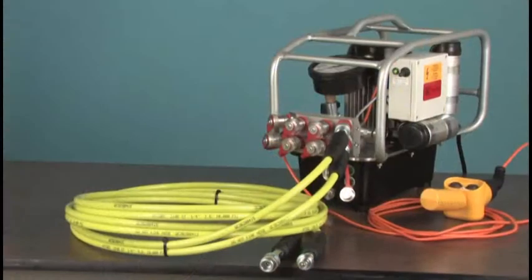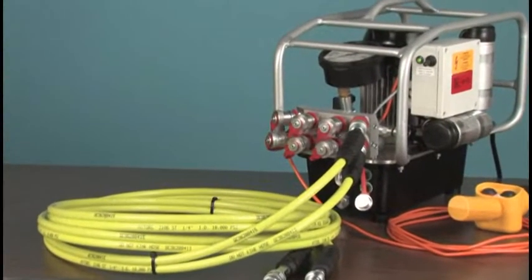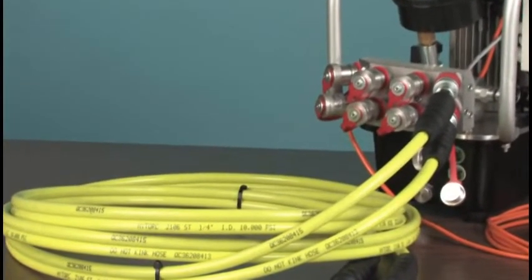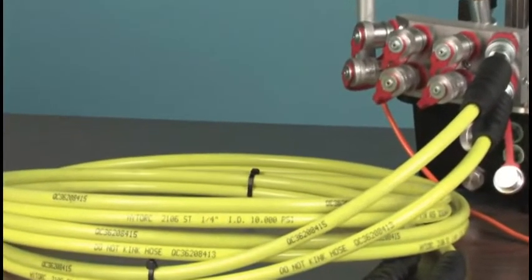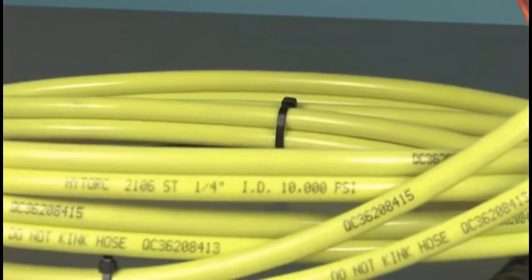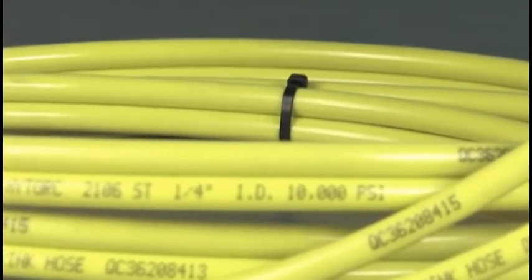The pump is connected to the wrenches by a very special set of high pressure hoses. The best of these will have a stainless steel braid construction. Always ensure that the hoses are rated for 10,000 PSI working pressure. This should be clearly printed on the hoses themselves.